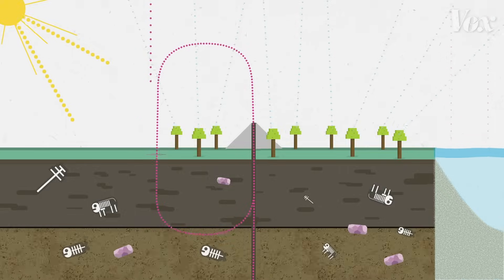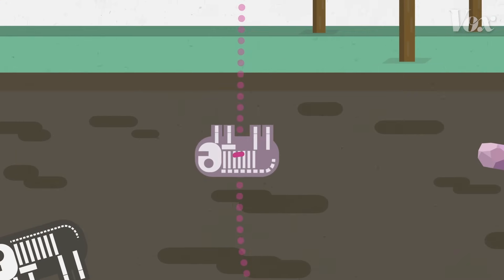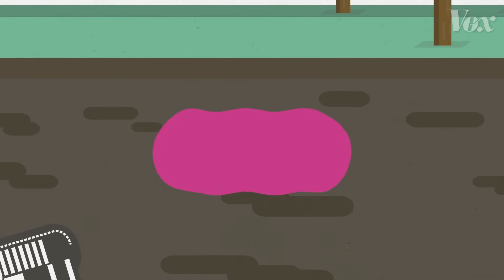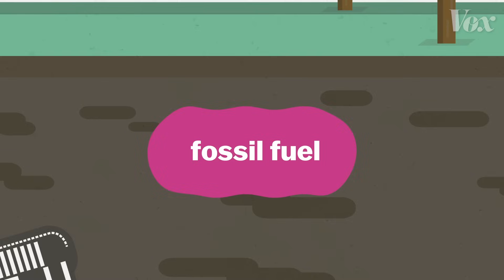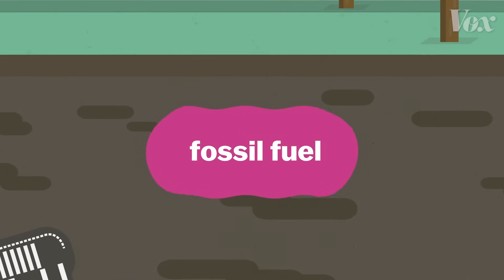But occasionally, dead plants and animals don't turn into rock. They don't decay fast enough, so they turn into oil, coal, or natural gas. This carbon gets stuck in the ground.